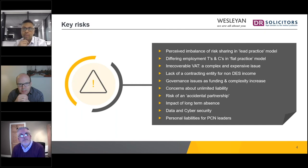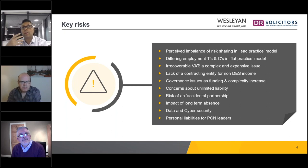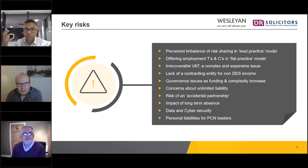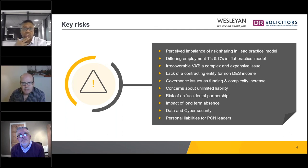There are also governance risks around clinical directors — what exactly is their capacity and what are their responsibilities? The BMA PCN handbook raises key considerations around decision-making: who is responsible for day-to-day operational decisions, and where does the buck stop if something goes wrong? For example, if an employee is injured moving between surgeries, who is liable? The HR processes and policies may be set by clinical directors, but ultimately it is they themselves who may be held responsible.